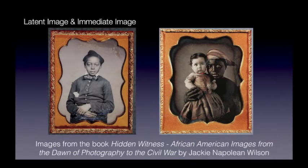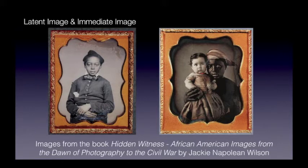When Daguerre announced his process to the public, it was difficult to convince people that an image was being made purely by the action of light. Since photography was assumed to be recreating human vision, there was an assumption that the camera was supposed to create that image instantaneously. Daguerre's job of convincing the public wasn't helped when he would take the plate out of the camera and disappear into a dark room to do the fuming of the plate over mercury to make the latent image appear, then emerge a few minutes later with a completed image. Many people must have thought he had a pre-made image in his little dark room.